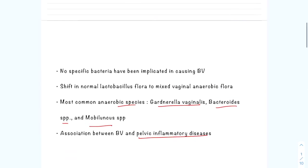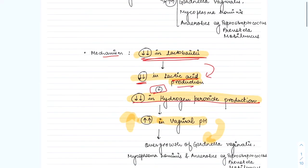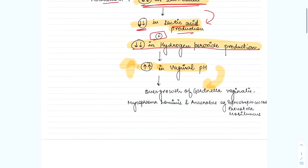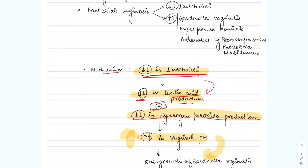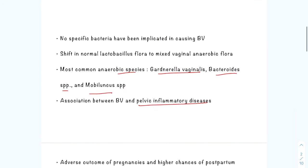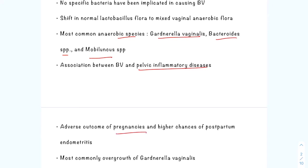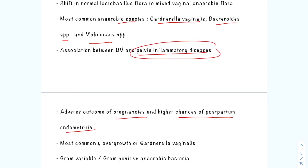Bacterial vaginosis is the most common cause of abnormal vaginal odour and discharge, caused by overgrowth of anaerobic species like Gardnerella vaginalis, Mycoplasma species, Mobiluncus, Peptostreptococcus, and Prevotella. It has been associated with adverse pregnancy outcomes, higher chances of postpartum endometritis, and increased risk of pelvic inflammatory disease.